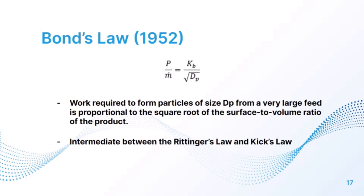Bond's Law, proposed in 1952, is said to be the most realistic method for estimating the power required for crushing and grinding. It defines the power required for crushing particles of size D_p from a very large feed as proportional to the square root of the surface-to-volume ratio of the product. Bond's Law is intermediate between Rittinger's and Kick's Laws and is given by: P/ṁ = K_D / √D_p.